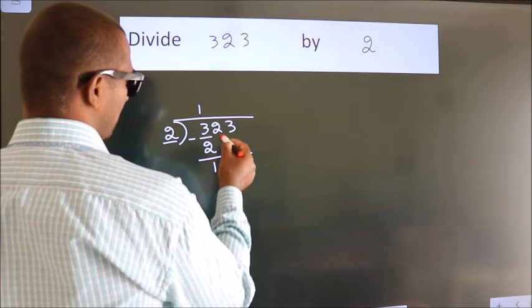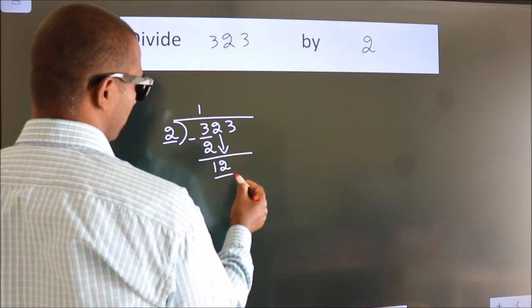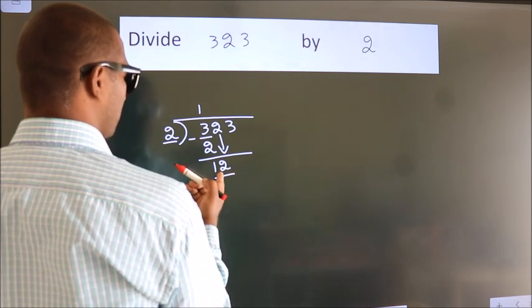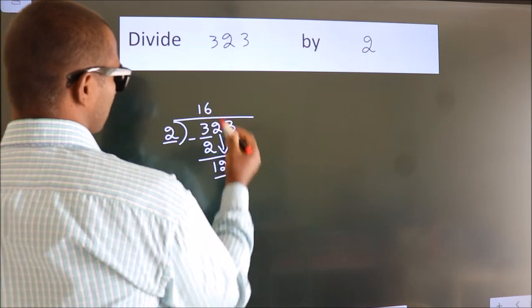Now, after this, bring down the beside number. So, 2 down. So, 12. When do we get 12? In 2 table. 2 6 12.